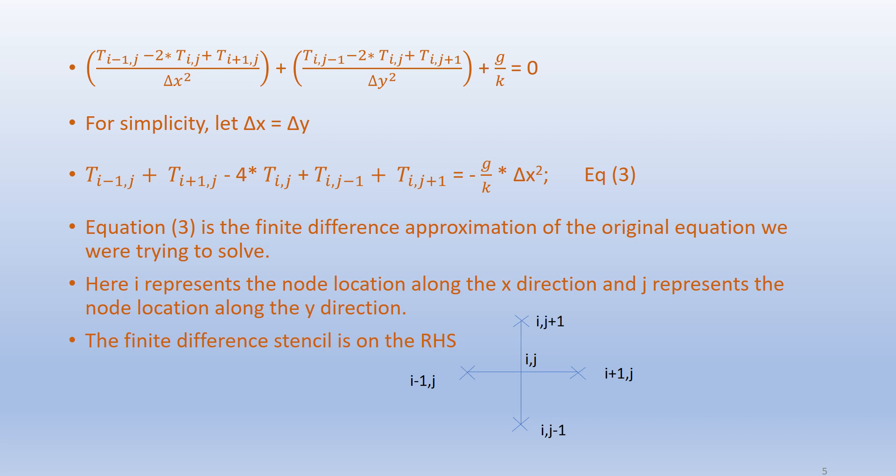We then get: T_{i-1,j} + T_{i+1,j} - 4T_{i,j} + T_{i,j-1} + T_{i,j+1} = -(G/K)·Δx². This is equation 3, the finite difference approximation of the original PDE. Here i represents the node location along the x direction and j represents the node location along the y direction.